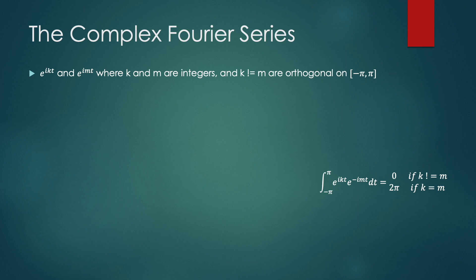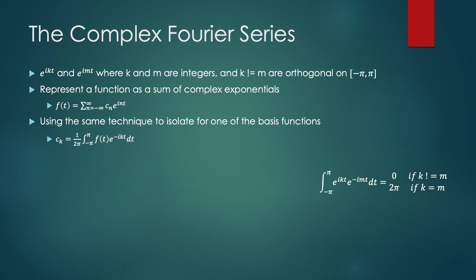So we have our orthogonal basis now. And we want to represent some function f of t as the sum of these orthogonal basis functions. Where n goes from minus infinity to infinity, we'll have our c sub n, which will be our complex coefficients now. So, using the same technique to isolate for one of the basis functions, we'll get c sub k equals 1 over 2π times the inner product of f of t with e to the i kt. And again, we use the complex conjugate for inner products with complex functions. And that will give us the Fourier series, the complex Fourier series.